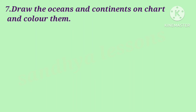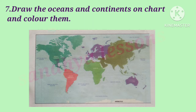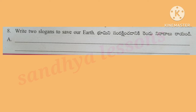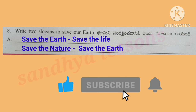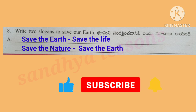Question 7: Draw the oceans and continents on chart and color them. Question 8: Write two slogans to save our earth — Save the earth, save the life; save the nature, save the earth.